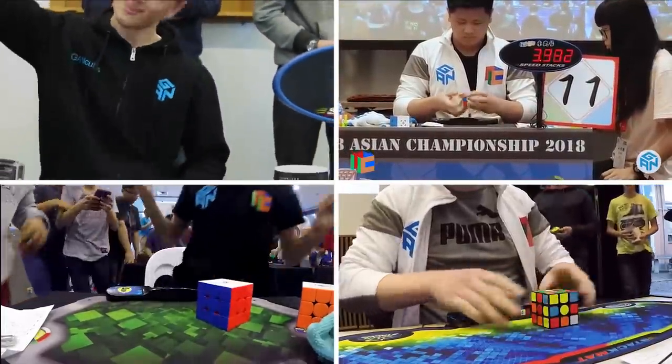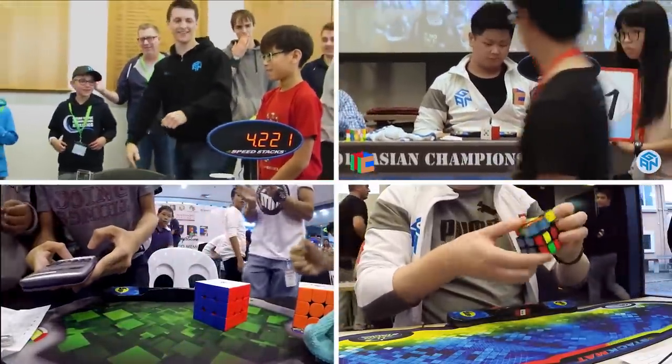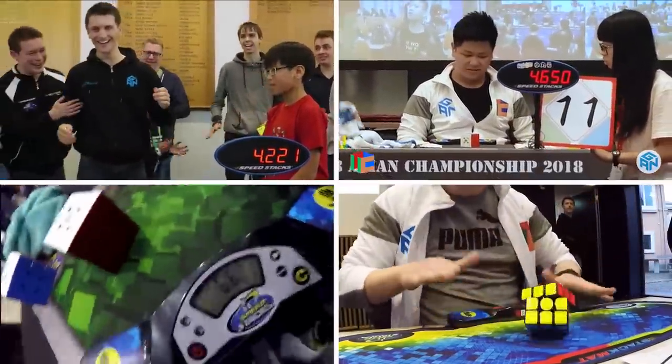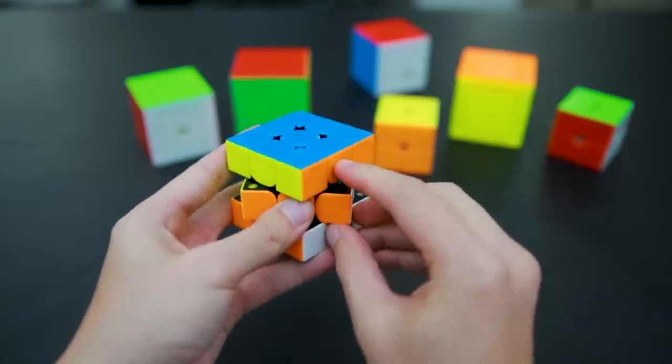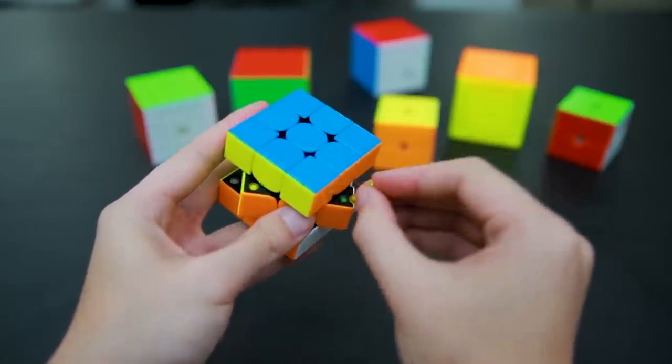The GAN 356X was a great refinement to the Air SM and it also added some pretty cool new features. You now have the ability to swap out the magnets in the cube in a matter of seconds, making it very easy to try different magnet combinations to suit your taste.